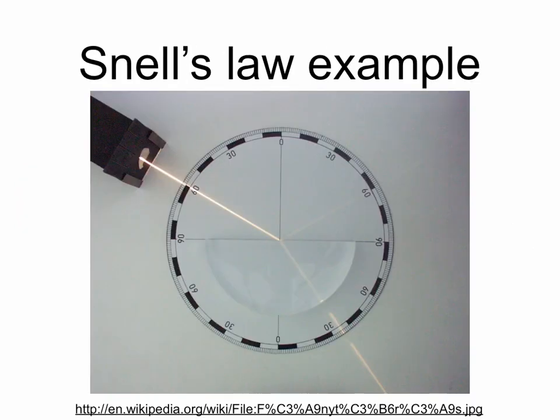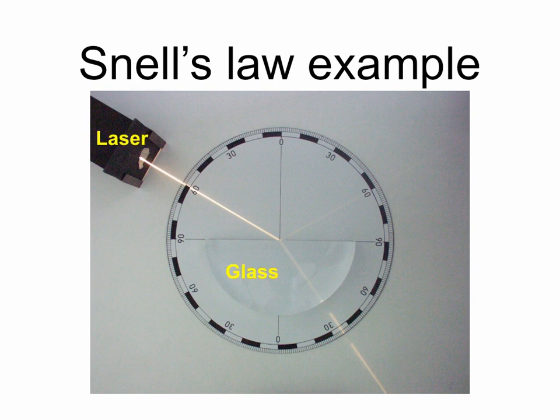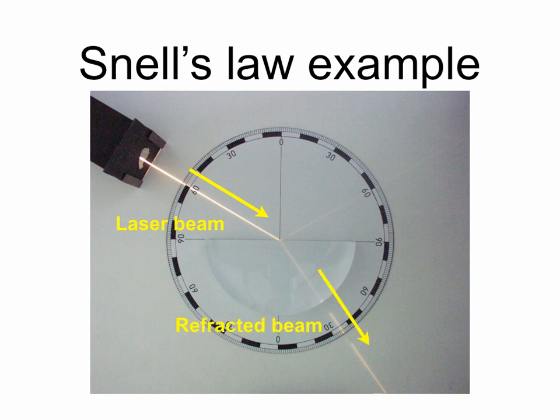Here's an example of Snell's Law. We have a laser and it's shining light on some glass. The incoming laser beam bends or refracts when it reaches the air-glass interface because air and glass have two different refractive indices. Air has a refractive index of about 1 and glass about 1.5.